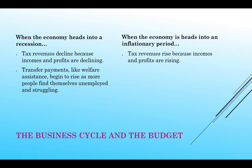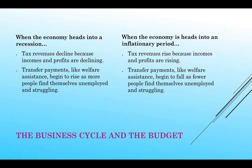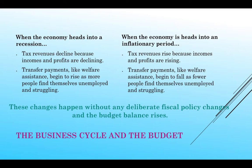When the economy goes into inflation, tax revenues automatically start to rise — people are working and businesses are doing well, so they're paying more taxes. And transfer payments like welfare begin to fall because fewer people are struggling. These things automatically happen without any deliberate fiscal policy, and the budget balance starts to adjust. In an inflationary period, tax revenues rise and we move towards a surplus. In a recessionary period, tax revenues fall and we start to move towards a deficit.